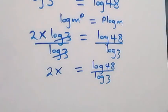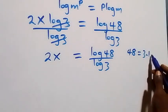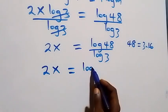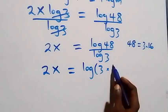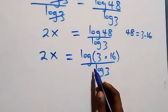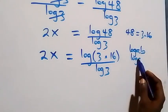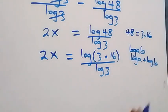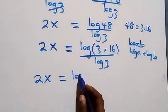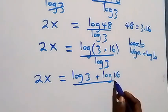Next step from here, we can express forty-eight as three times sixteen. Then what we have becomes two x equals to log of three times sixteen, over log three. This follows from the law of logarithms: when we have log of a times b, this is the same thing as log a plus log b.